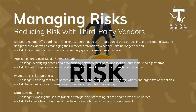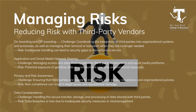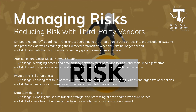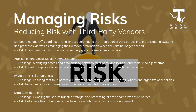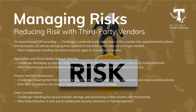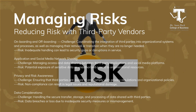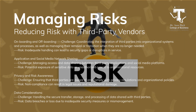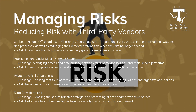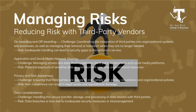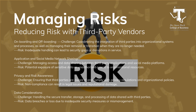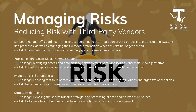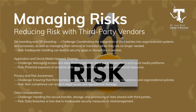Working with third parties can come with its own set of risks, especially when coordinating their activities with your organization. Key areas where risks can arise include: onboarding and offboarding — bringing third parties into your system and then removing them can be complex, so it's crucial to manage these transitions smoothly to avoid security gaps; application and social media network sharing — integrating third-party applications or sharing data on social networks can introduce vulnerabilities; privacy and risk awareness — third parties might have different standards for privacy, so ensuring they align with your organization's policies is essential; and data considerations — you need to manage how data is shared, stored, and protected to avoid breaches.